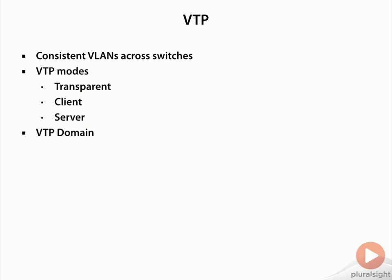The VTP domain is null by default, and we give it a name so that we can scope the VLANs within our organization where we're going to exchange VLAN information. We only want them to exchange within the VTP domain. The VTP password gives us a means to authenticate the VTP updates that we're receiving from a peer.